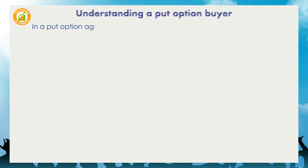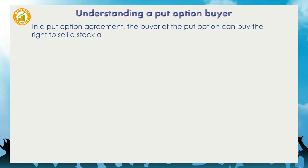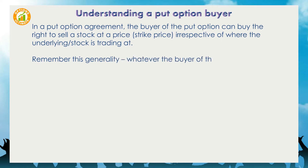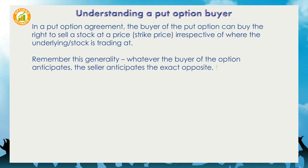In a put option agreement, the buyer of the put option can buy the right to sell a stock at the strike price, irrespective of where the underlying stock is trading at. Remember this generality: whatever the buyer of the option anticipates, the seller anticipates the exact opposite — therefore a market exists. After all, if everyone expects the same thing, a market can never exist.